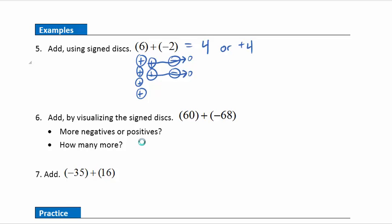Example six: add by visualizing signed disks. We're looking at sixty plus negative sixty-eight. Drawing out sixty disks won't help us, so we ask two questions. First, do we have more positives or more negatives? We have sixty positives and sixty-eight negatives, so we have more negatives — meaning our answer will be negative. Then, how many more? Sixty-eight minus sixty gives us eight more negatives, so the answer is negative eight.